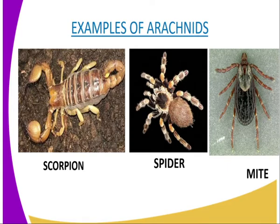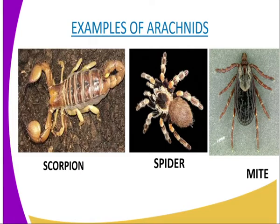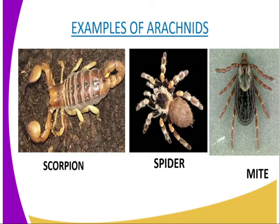Another characteristic is that the cephalothorax commonly has eight simple eyes. Most arachnids have lung books for gaseous exchange — that is internally. Members of this class are carnivorous and are able to paralyze prey using the poison produced from poison glands. Those are the general characteristics of Class Arachnida.